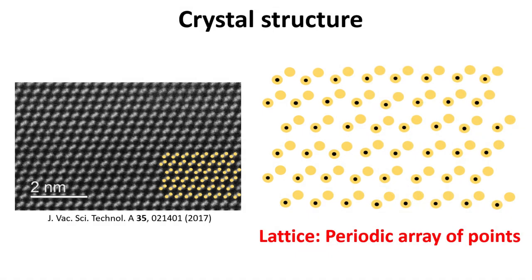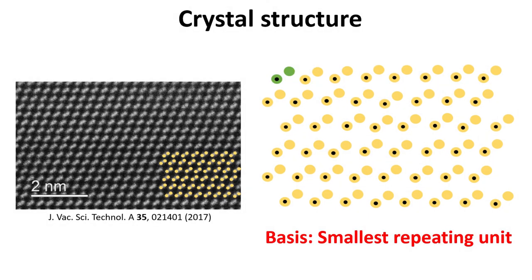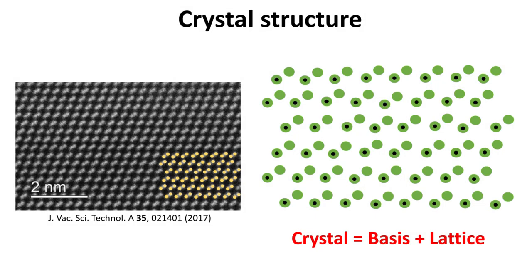The description of crystal structures is greatly simplified through the concepts of lattices and basis. The crystal lattice is an infinite and spatially periodic array of points as shown. The basis is the smallest unit or group of atoms in a crystal that repeats periodically through space and builds up the entire crystalline solid. In our example, the basis is composed of two atoms, highlighted in green. The entire crystal structure can then be constructed by attaching the basis to each lattice point. In other words, any crystal structure can be constructed by a set of lattice and basis.